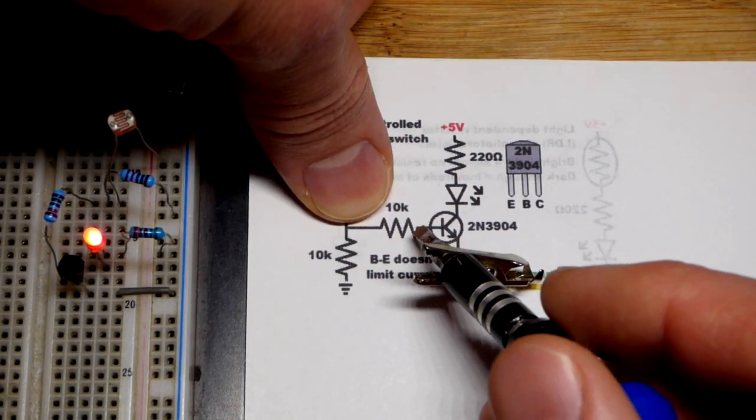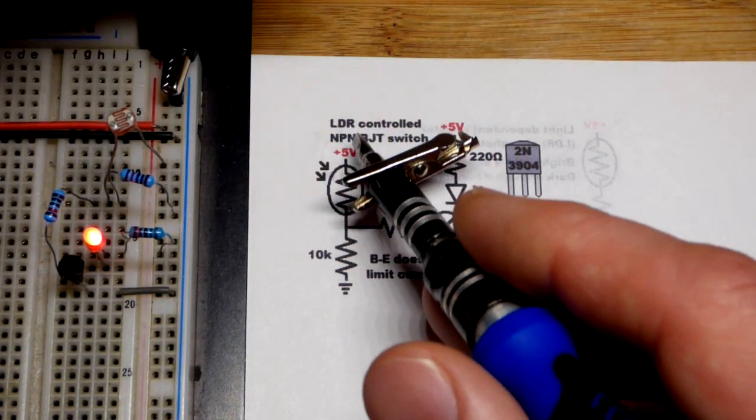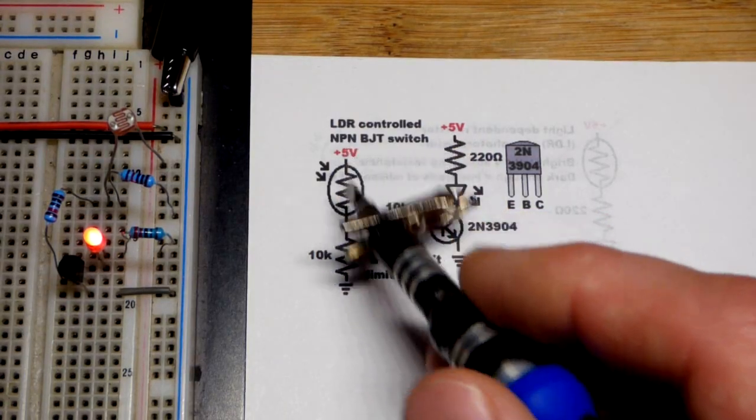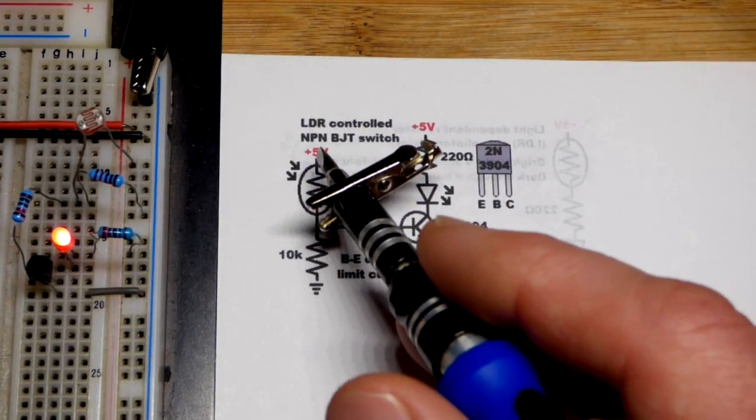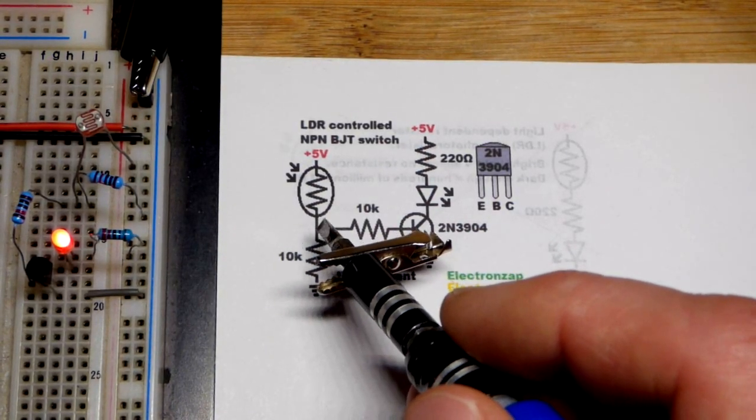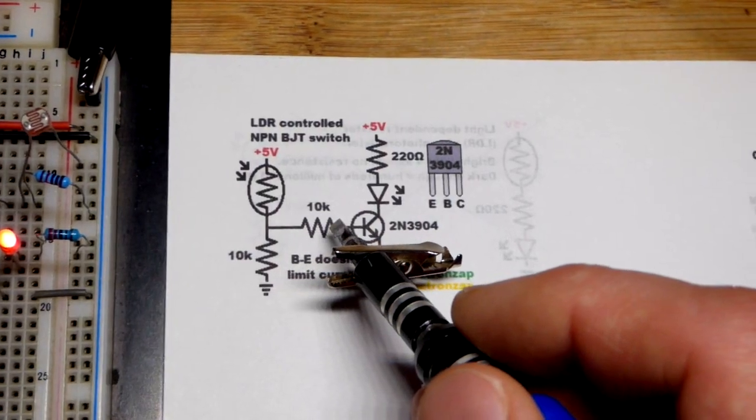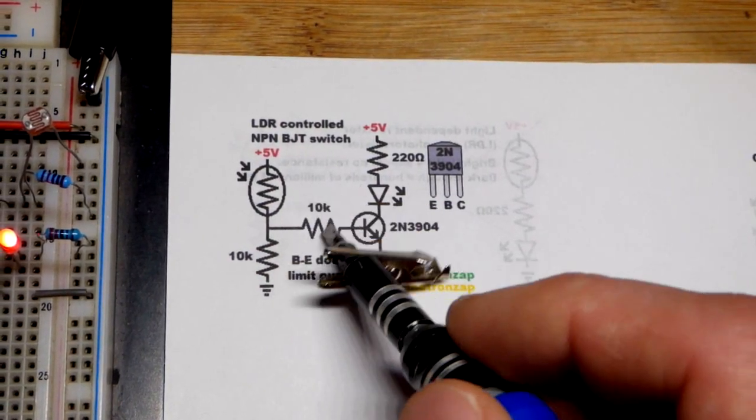We don't even need a ton of light in this circuit. Even with low level light, current is going to flow through the light dependent resistor and 10k resistor until we get to about 0.6 volts. Then it will also start flowing through that 10k resistor to ground.